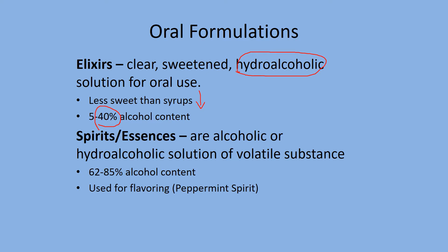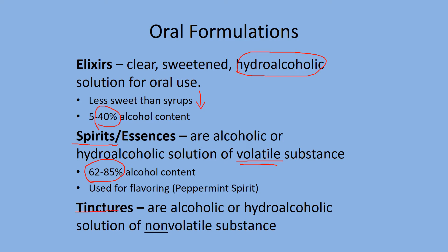Spirits and essences — spirits are another term for distilled alcohol, which is collected by evaporation of the mash, so fairly high alcohol content. The key term for spirits is volatile, meaning it will evaporate. If you put a scent in it, like peppermint, you'll be able to smell it. The opposite of an essence or spirit is a tincture — it contains a non-volatile substance, so it's not going to evaporate into the air.